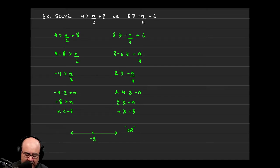And again, we're trying to solve for n. So we're going to take this 4 and multiply it over to the other side because it's being divided on the right-hand side. 2 times 4 is 8. So then we get 8 is greater than or equal to negative n.